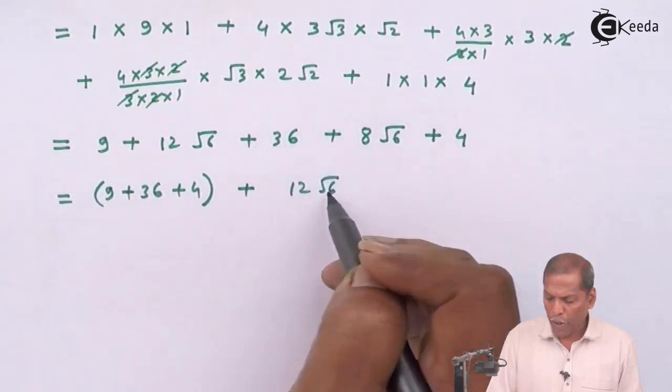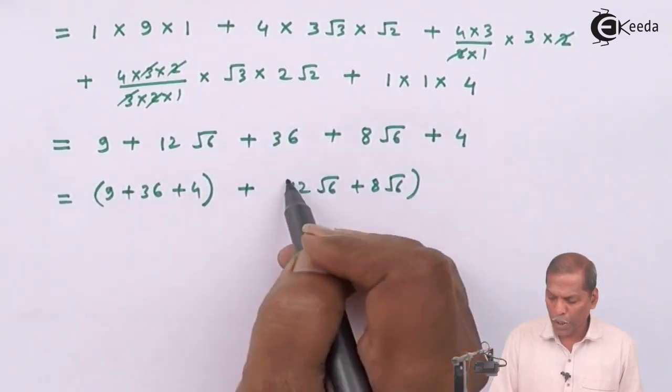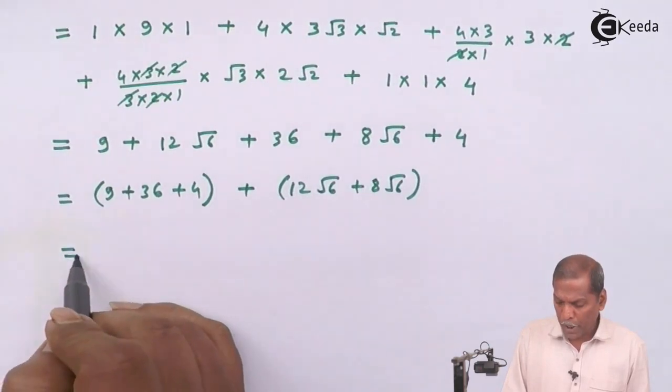And the remaining two terms that 12 root 6 plus 8 root 6 in the second bracket.